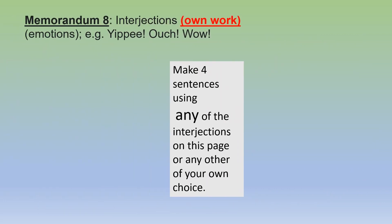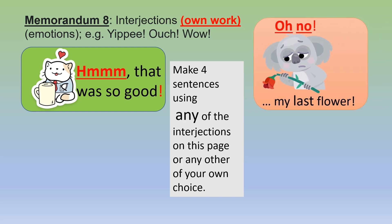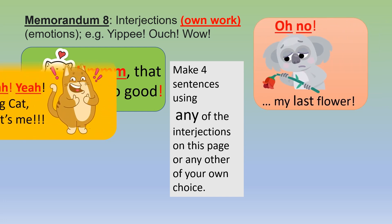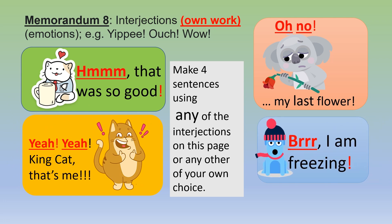Memorandum eight — interjections, own work. Emotions. For example: yippee, ouch, wow. Make four sentences using any of the interjections on this page or any other of your own choice. Sample examples: Mmm, that was so good. Oh no, my last flower. Yeah yeah, king cat, that's me. I'm freezing.